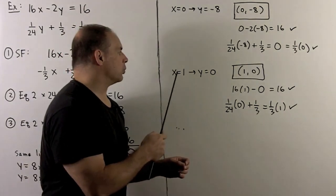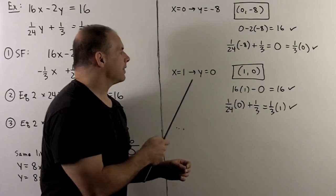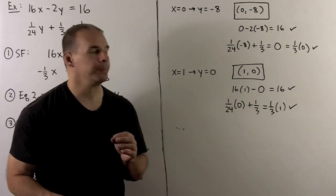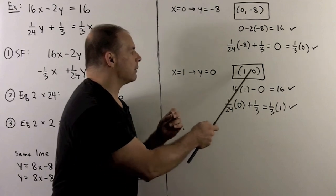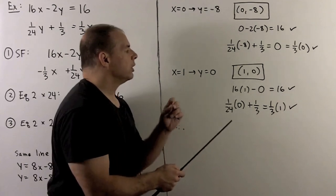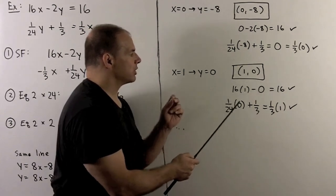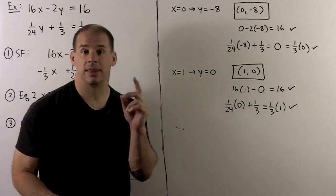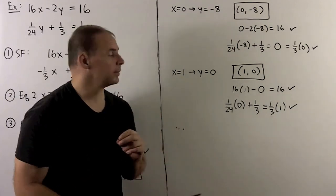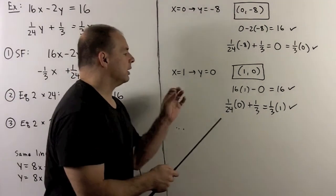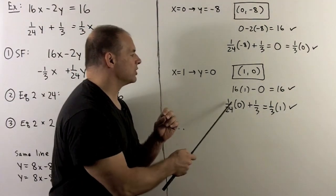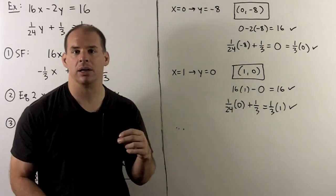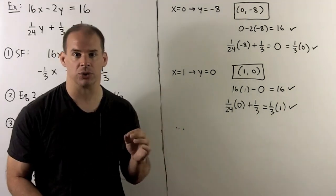We can also take x equals 1, which gives y equals 0 from the line equation, yielding the solution (1, 0). Checking in the first equation: 16 times 1 minus 0 equals 16 — that checks. In the equation with fractions: one-twenty-fourth times 0 plus one-third equals one-third times 1 — that also checks.